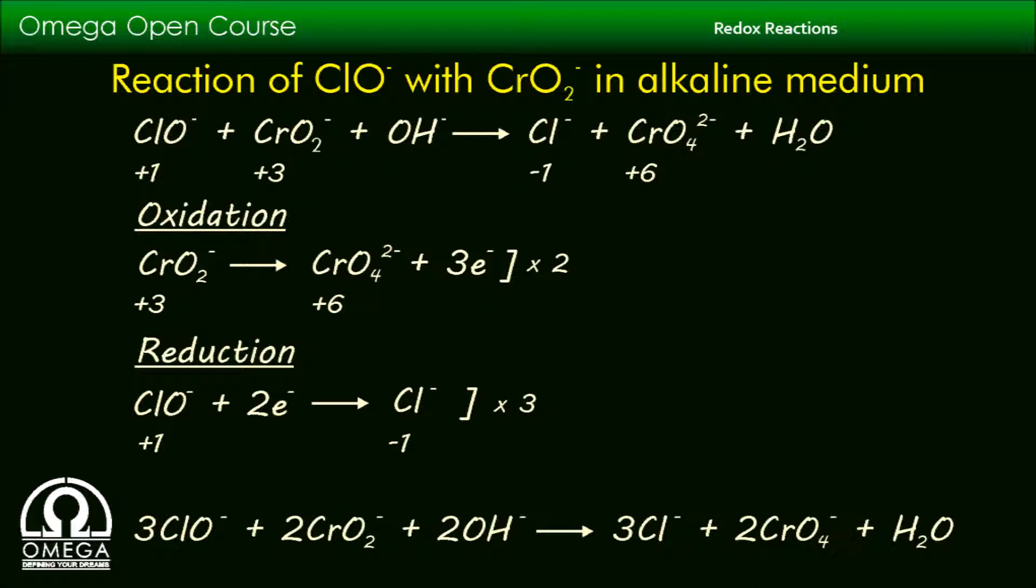After doing so, we get the coefficients of important species. Coefficient of ClO⁻ in reactant side and Cl⁻ in product side is 3, and the coefficient of CrO₂⁻ in reactant side and CrO₄²⁻ in product side is 2.